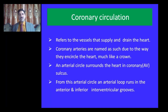Coronary circulation refers to the vessels that supply and drain the heart. Coronary arteries are named as such due to the way they encircle the heart. They form an arterial circle which surrounds the heart in the coronary sulcus, also called the atrioventricular sulcus. The main trunks of right and left coronary artery occupy this sulcus, except in the region of the pulmonary trunk. From this arterial circle, an arterial loop in the anterior and inferior interventricular groove emerges.